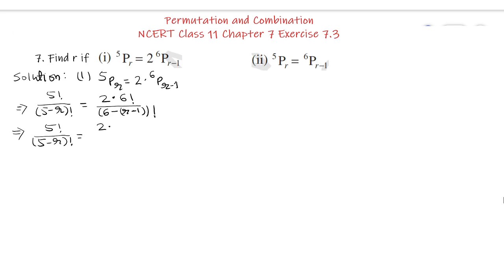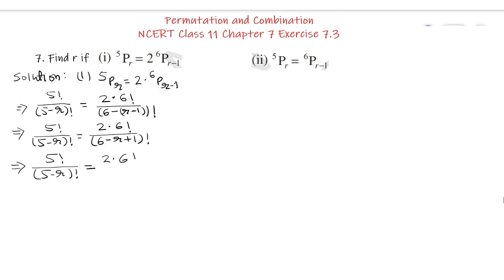We solve the bracket first: (R minus 1) inside gives us 5 factorial upon (5 minus R) factorial, equal to 2 into 6 factorial upon (7 minus R) factorial. On the left side this is written as 5 factorial upon (5 minus R) factorial.